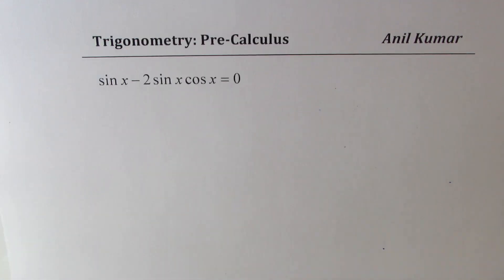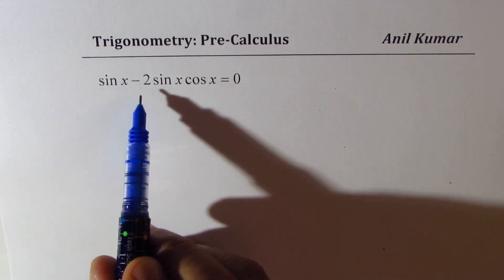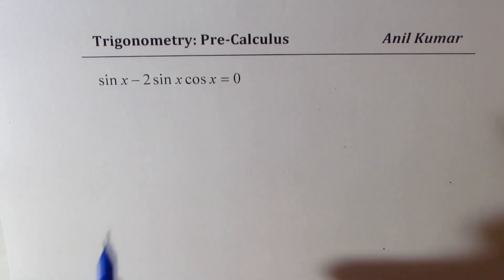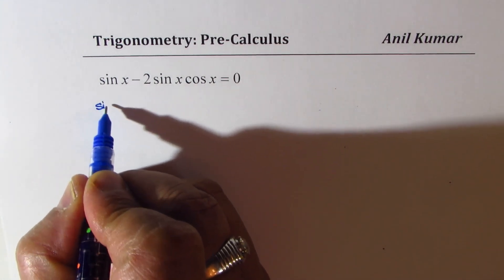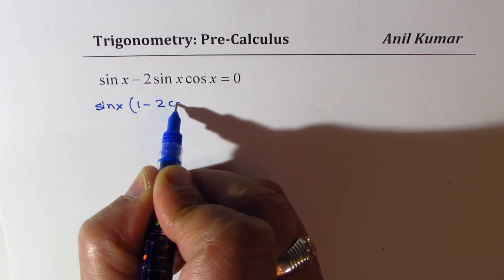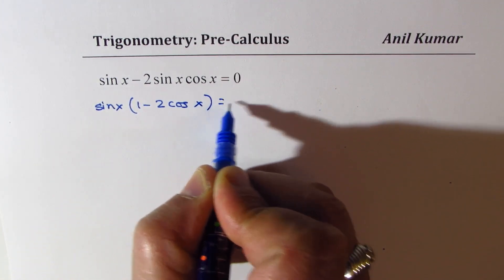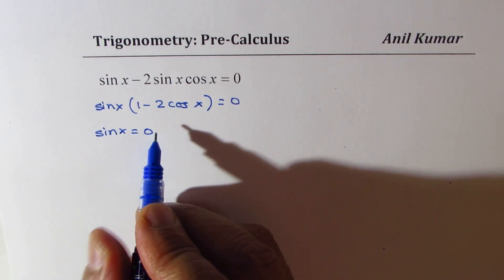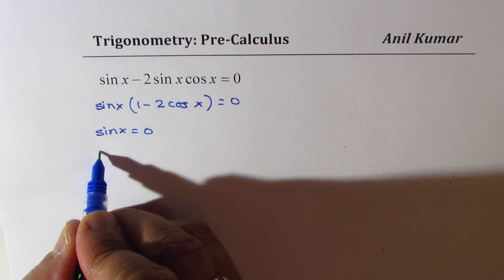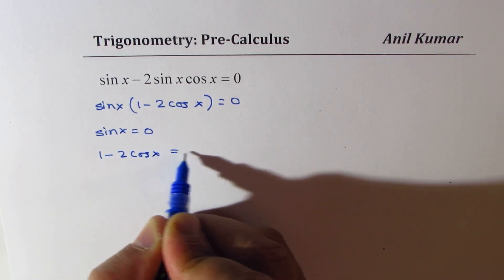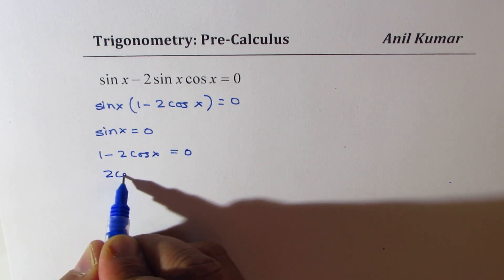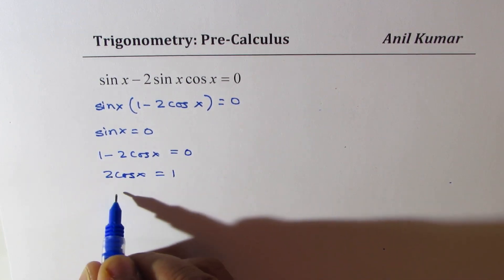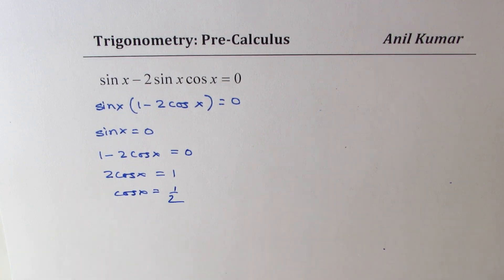Now the second equation: sin x − 2sin x cos x = 0. Taking sin x as a common factor, we get sin x·(1 − 2cos x) = 0. This gives two conditions: sin x = 0 and 1 − 2cos x = 0, which means cos x = 1/2.